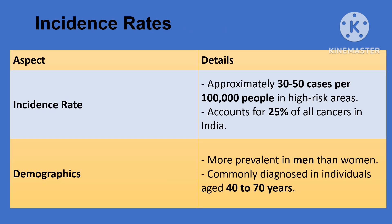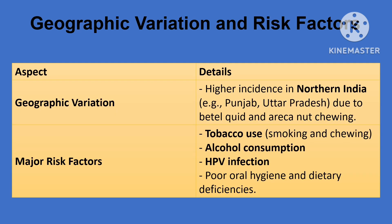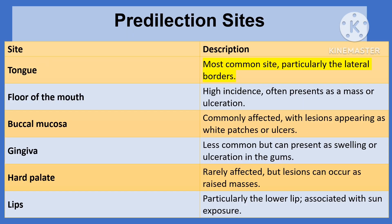Now let's talk about the incidence in reference to the Indian population. India has one of the highest rates of oral cancers globally. The incidence is approximately 30 to 50 cases per 1 lakh people in high-risk areas. Oral cavity cancers account for about 25% of all cancers diagnosed in India. Certain regions, particularly in northern India like Punjab and Uttar Pradesh, show significantly higher incidence rates, often linked to lifestyle choices such as betel quid and areca nut chewing.